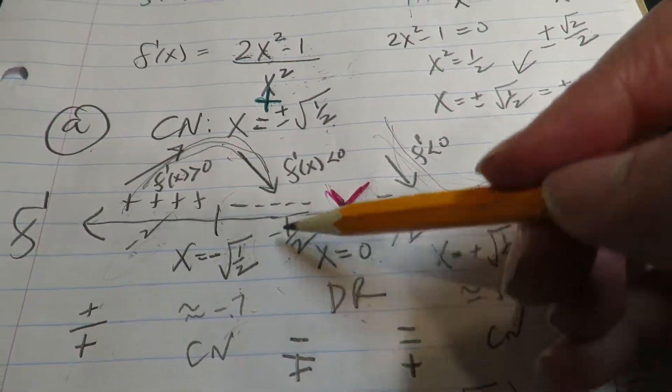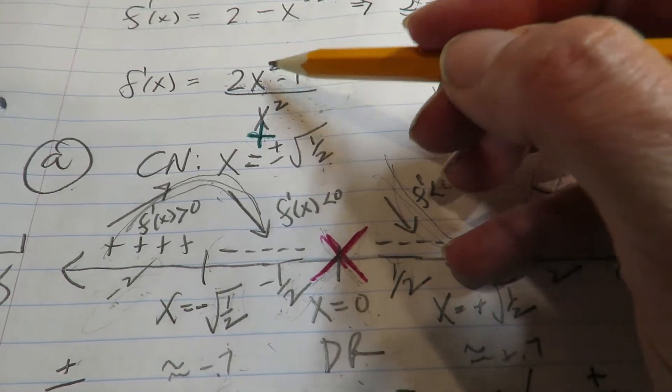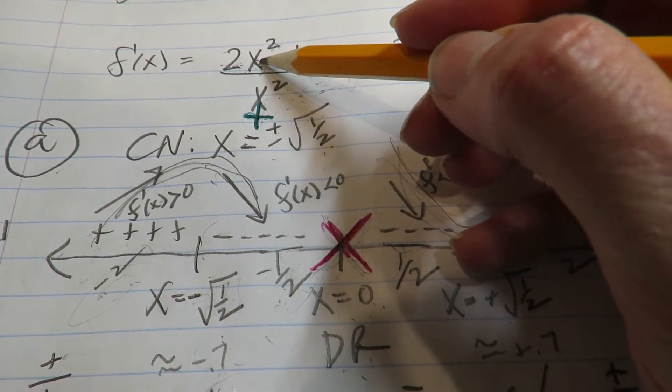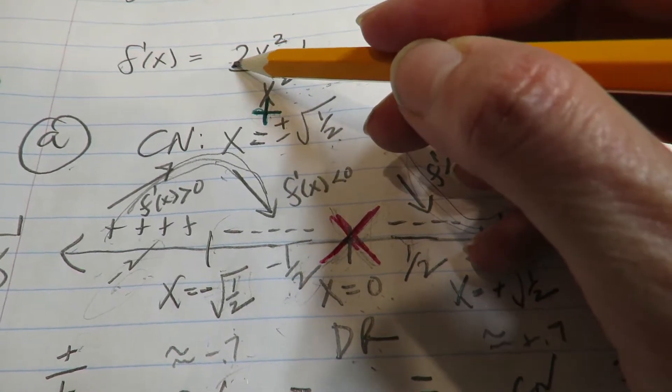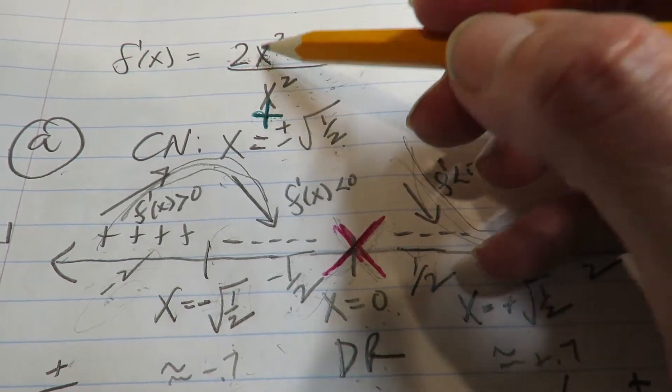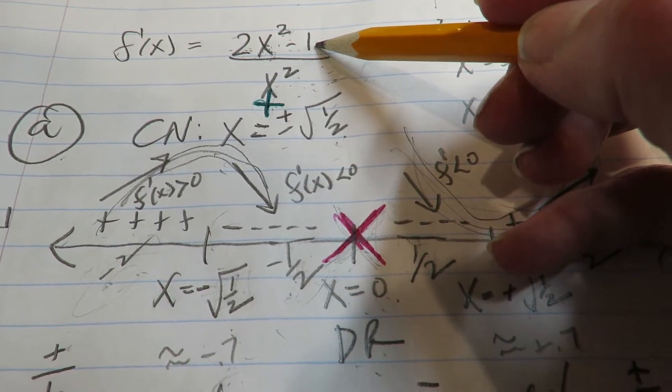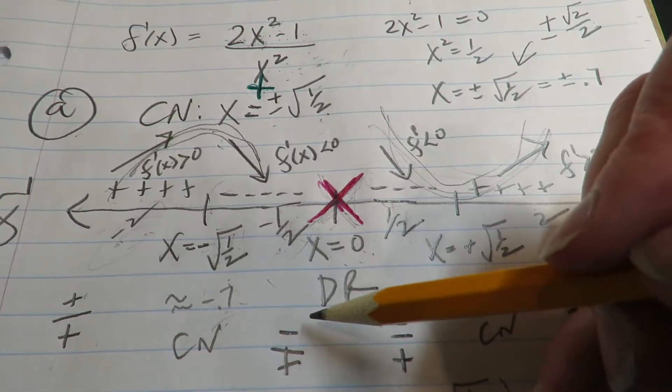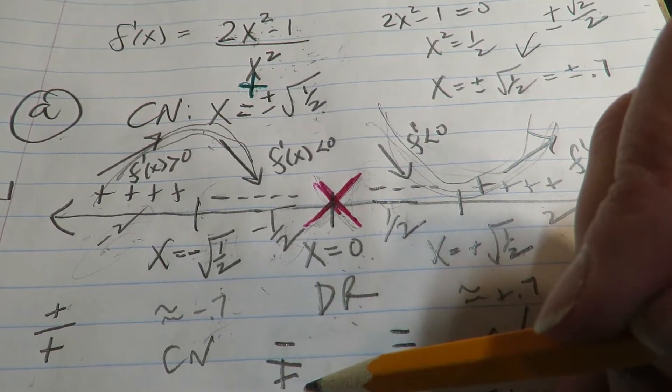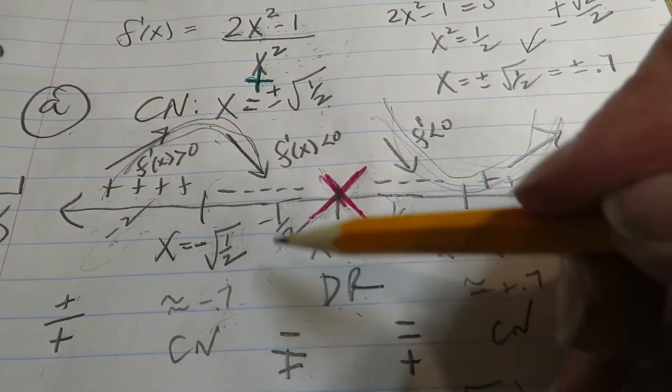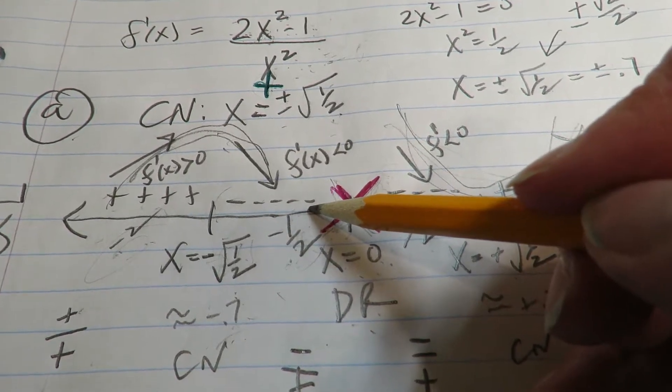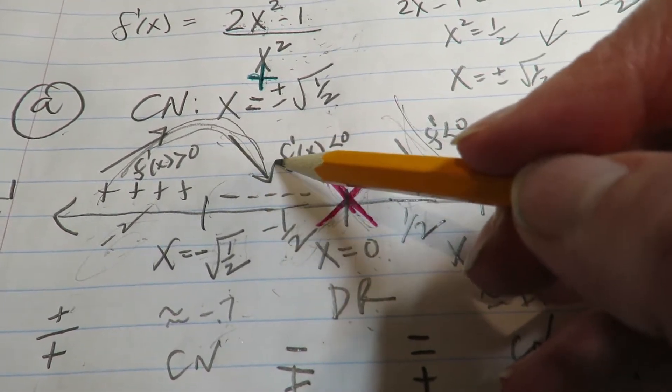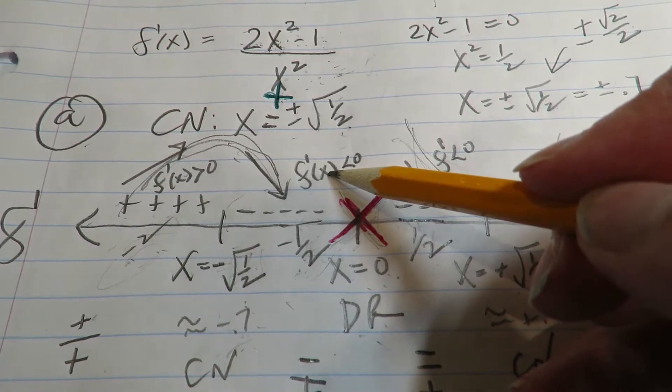And then I plugged in negative a half for this interval. So negative a half squared is positive a quarter. A quarter times two is a half. A half minus one is negative one half. So that's giving me a negative over a positive, which overall that fraction would be negative. So that's why you see me doing a negative here. That means the function's coming down because the derivative is negative.